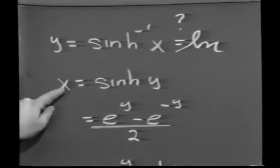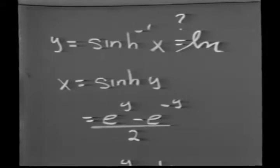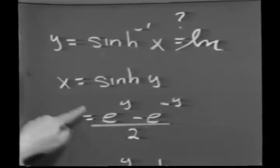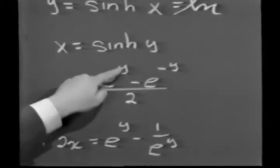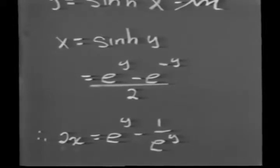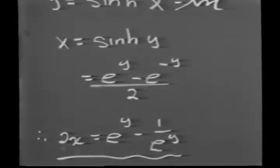In other words, in terms of exponentials, x is equal to e to the y minus e to the minus y over 2. If I now cross-multiply, I get that 2x is equal to e to the y minus, now notice that e to the minus y is just 1 over e to the y. So I wind up now with this particular equation.